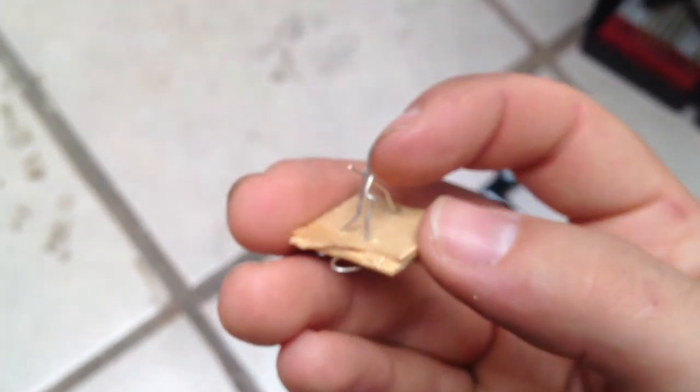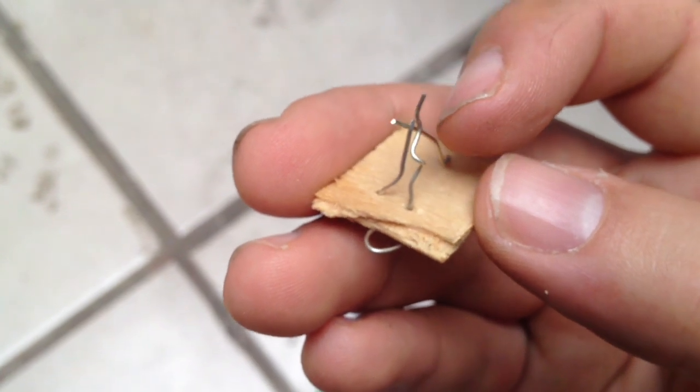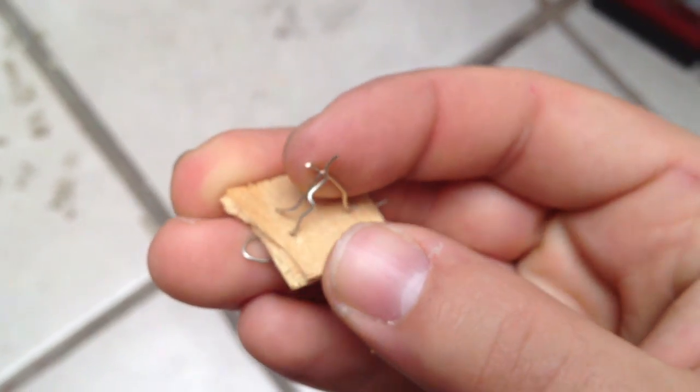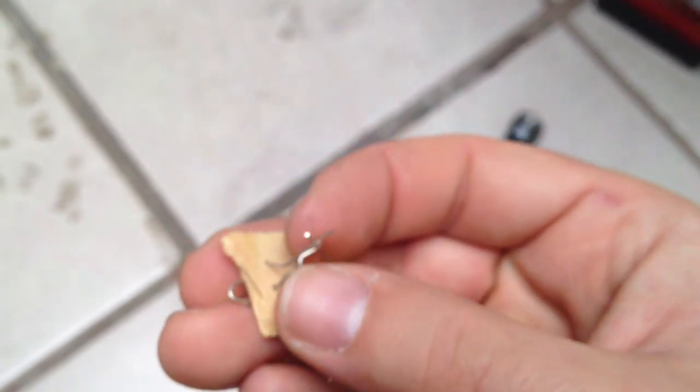Basically you just take a piece of wire and you strip off all the insulation and you loop it around. And then you have another piece of wire and basically to switch it you just go between the two, just like that.